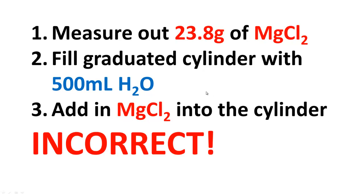And the issue is that once you add in the 23.8 grams of magnesium chloride into the graduated cylinder already with 500 mL of water, you're going to displace the volume of the water, right? Because the chemical itself has a volume, and you're actually going to have over 500 mL of total volume in the end. So your solution will not be 0.5 molars.